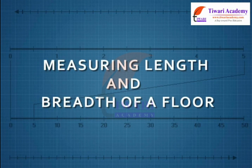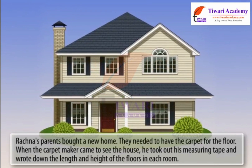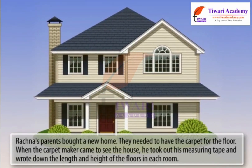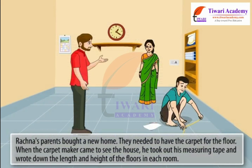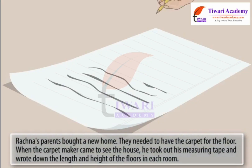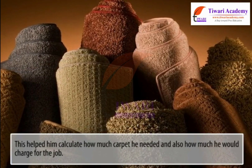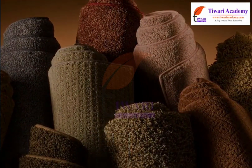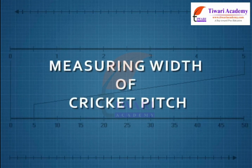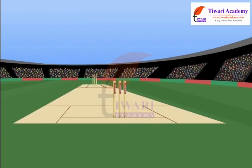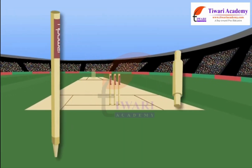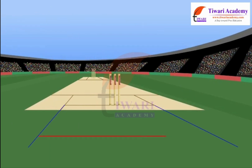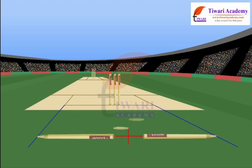Rachna's parents bought a new home and needed carpet for the floor. When the carpet maker came, he took out his measuring tape and wrote down the length and height of the floors in each room. This helped him calculate how much carpet he needed and how much he would charge for the job. Similarly, the width of a cricket pitch can be measured using a dunda and ghillie — Rekha and Rahul measured it as two dunda and one ghillie.